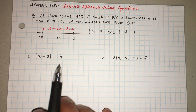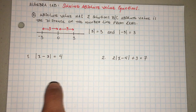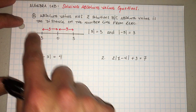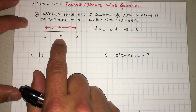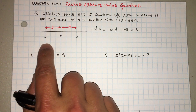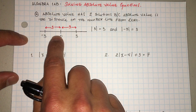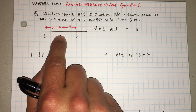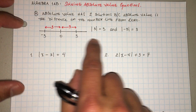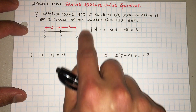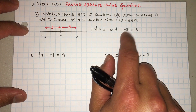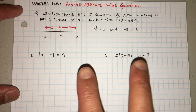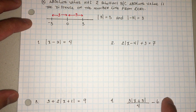One thing about absolute value you want to remember is absolute value is going to have two solutions. Why? Because absolute value is the distance on the number line from 0. So here's 0, here's positive 3, here's negative 3. The distance from 0 to 3 is 3 units, and from negative 3 to 0 is still 3 units — 3 steps. So absolute value of 3 equals 3, and absolute value of negative 3 also equals 3. So when you're solving these equations you can have two solutions.